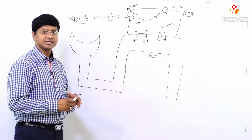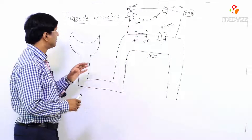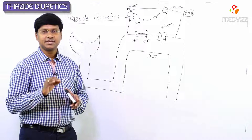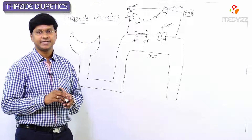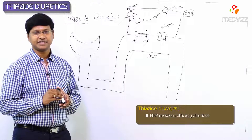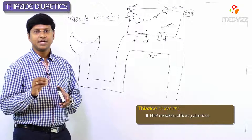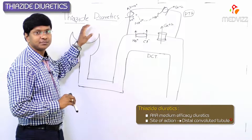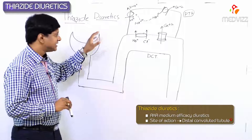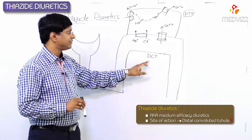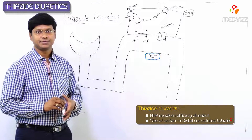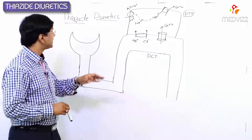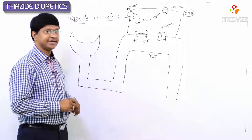Next, let me discuss the thiazide diuretics. These thiazide diuretics are called medium efficacy diuretics. The site of action of these thiazide diuretics is at the level of the distal convoluted tubule. Now before going into the mechanism of action of these thiazide diuretics, let me tell you the examples.